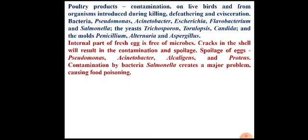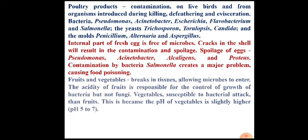Eggs — internally, eggs are free from microorganisms. However, if there are any cuts in the shell of the egg, there are chances of entry of foreign microorganisms inside, leading to growth and multiplication of contaminants and spoilage. Examples of bacteria responsible for spoilage of eggs are Pseudomonas, Acinetobacter, Alcaligenes, and Proteus. Contamination by Salmonella creates major issues because it is associated with causing severe food poisoning.